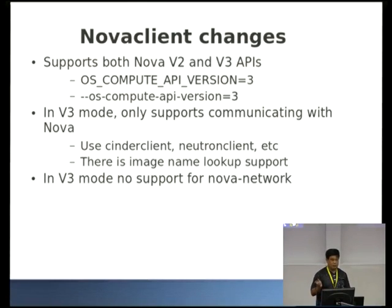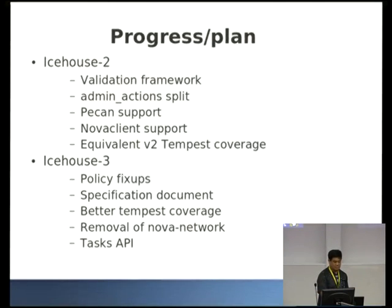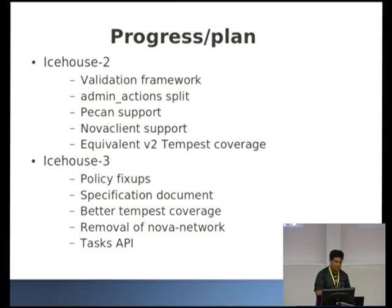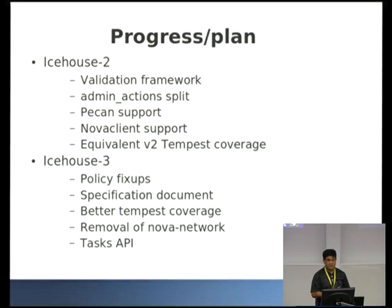In V3 we've got no support for Nova Network stuff, though that may come back in. Icehouse 2 is what we've got planned to finish up. The main things left are better Tempest coverage, the specification work which we haven't got done yet, and the tasks API.